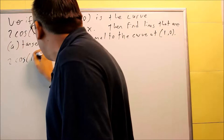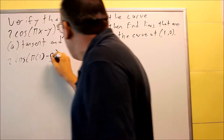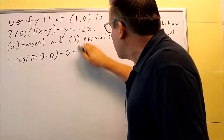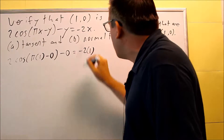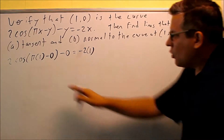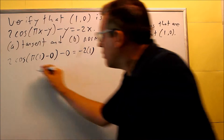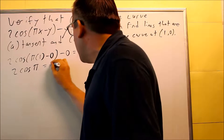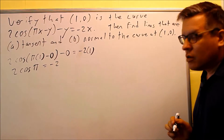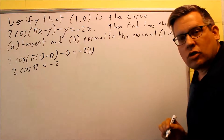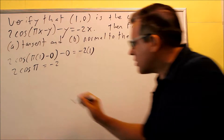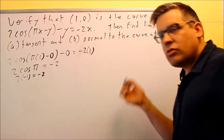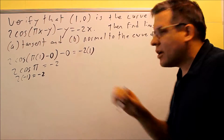2 cosine of pi times 1 minus 0, another 0 here, and then on the right hand side, negative 2 times 1. We need to do some simplifying: 2 cosine of pi equals negative 2. You need to use your unit circle - cosine of pi is negative 1, so 2 times negative 1 is negative 2. That's your verification step; both sides are equal.